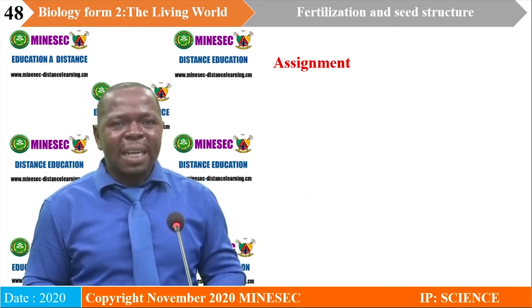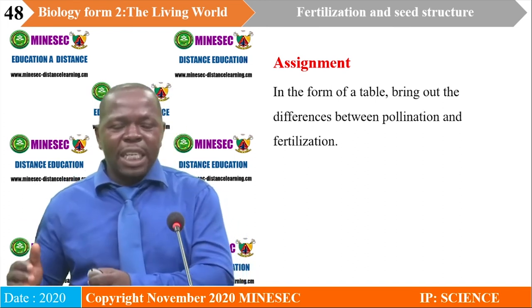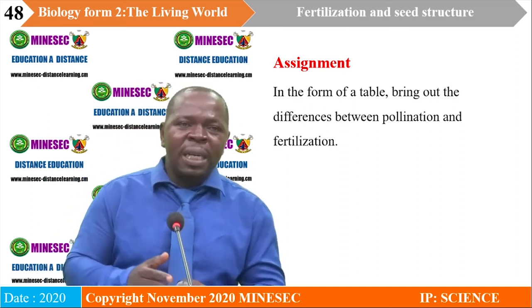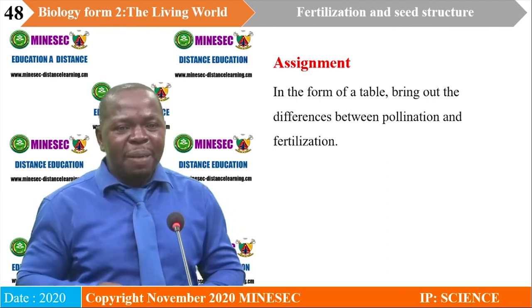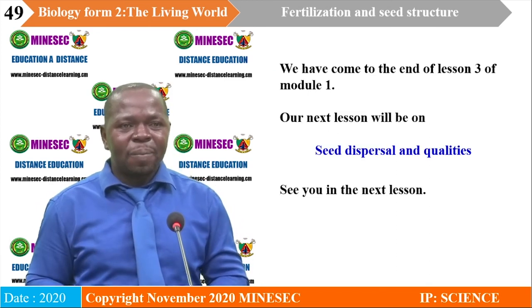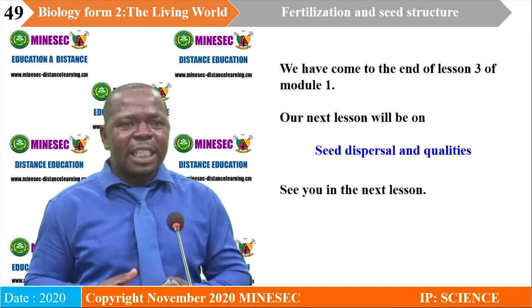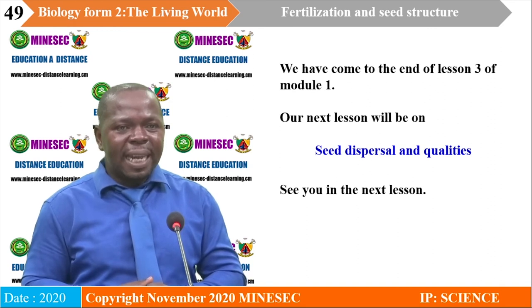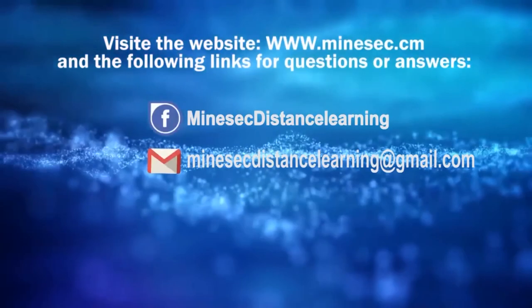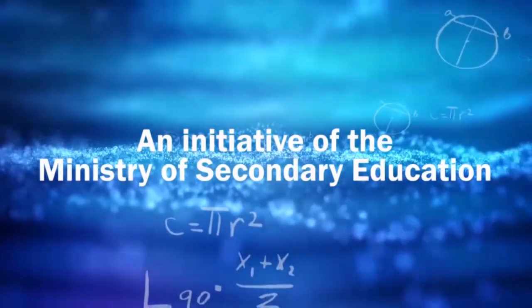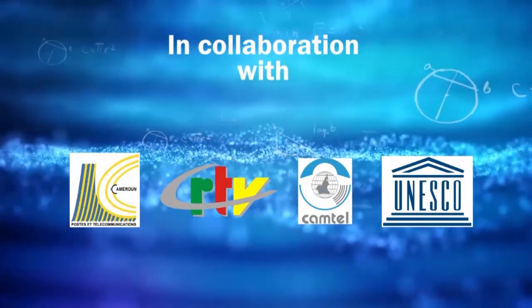Assignment: Your take-home assignment is to bring out the differences between pollination and fertilization in the form of a table. Make sure you do your assignment as it will serve as previous knowledge in our next lesson. We have come to the end of lesson three of module one. Our next lesson will be on seed dispersal and qualities. See you next lesson. Thank you so much.